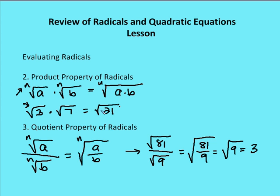The quotient property of radicals is similar but involves division: the nth root of a divided by the nth root of b equals the nth root of a over b. For example, the square root of 81 over the square root of 9 equals the square root of 81 over 9, which is the square root of 9, which equals 3.